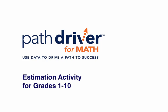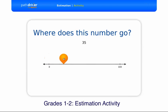The third and final activity in the grades one to ten tests is estimation. Students are presented with a number line and a target number. They drag and drop the orange balloon to the point on the number line where they think the target number goes.